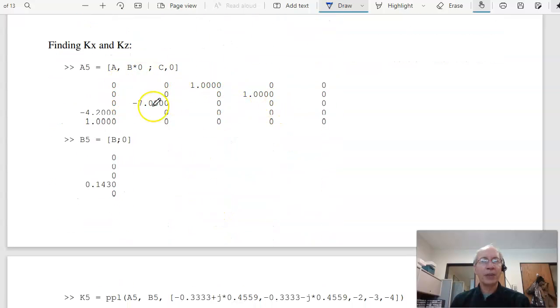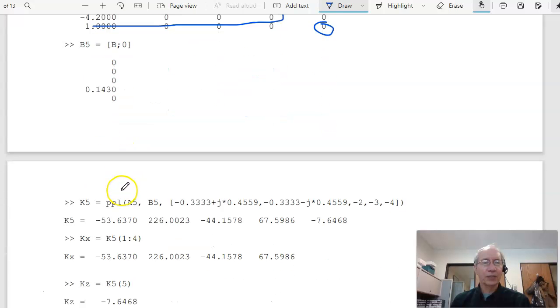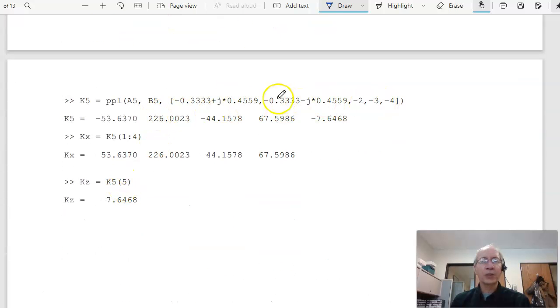This is the open loop augmented system. Here's the closed loop augmented system. Find kx and kz using pole placement. That's my 5x5 A matrix. Here's my 5x1 B matrix. Place 5 poles. So I form the augmented system. Here's my A matrix. There's my servo compensator right here. There's A. There's B times C. Bz times C. And my B matrix.